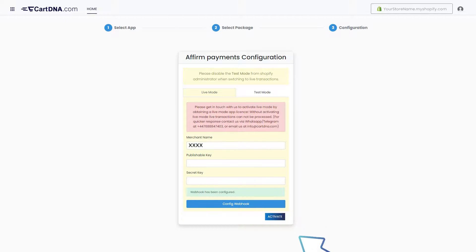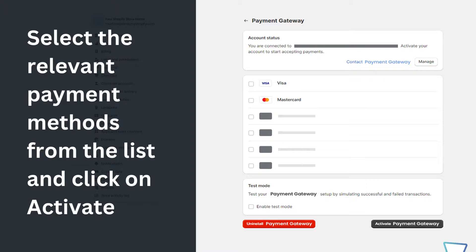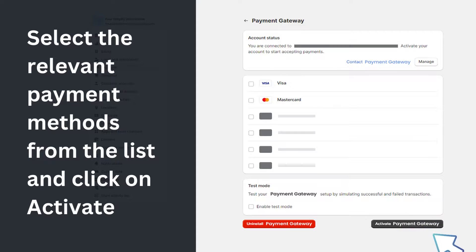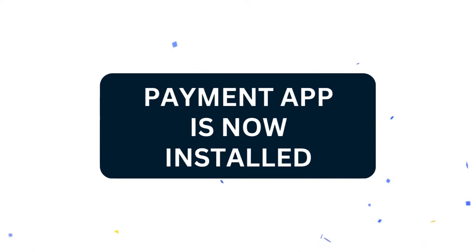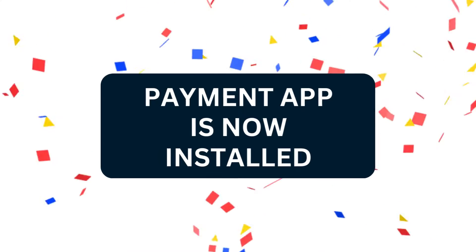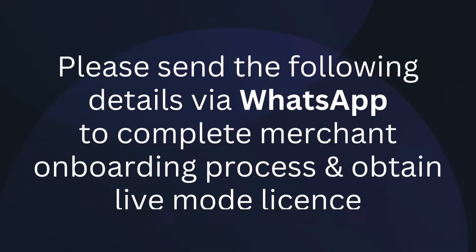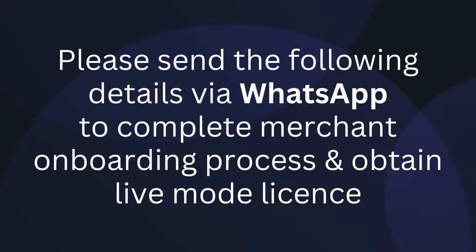Then click on Activate. Select the relevant payment methods from the list and click on Activate. Your payment app is now installed. Please send the following details via WhatsApp to complete the merchant onboarding process and obtain a live mode license.